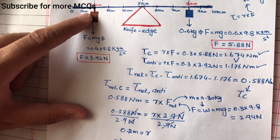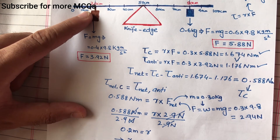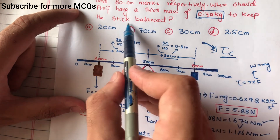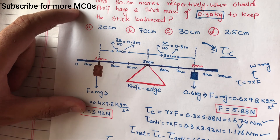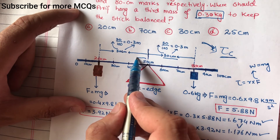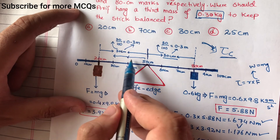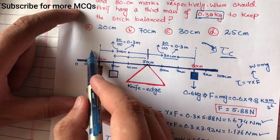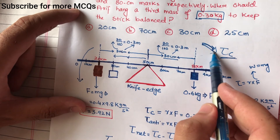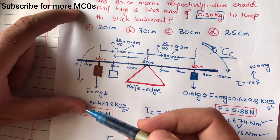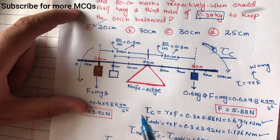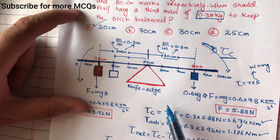r = 0.2 meter — اگر اس کو centimeter میں change کریں تو 20 centimeter ہو جائے گا۔ تو question کا جواب ہے: third mass کو 20 centimeter کے distance پر knife edge کے right side پر attach کریں — یہاں سے 10 cm اور آگے 10 cm، total 20 cm۔ یہاں attach کرنے پر anti-clockwise torque اور clockwise torque ایک دوسرے کو balance کریں گے اور rod equilibrium میں آ جائے گا۔ So the correct answer is 20 centimeter. If you have any MCQ problem, comment کیجیے گا — انشاءاللہ solution ملے گا۔ Thank you.